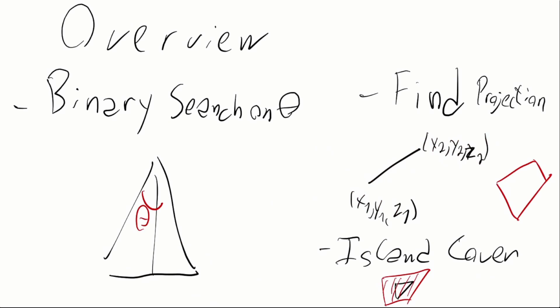The overview of the solution is that we want to do a binary search on the angle theta. Having one of the thetas fixed, we can then first find a projection of the trajectory of the plane into the 2D polygon. And then we can proceed to check which of the islands are covered with this angle theta. If all the islands are covered, we can try to reduce the angle, and if at least one of them is not, we can increase the angle.